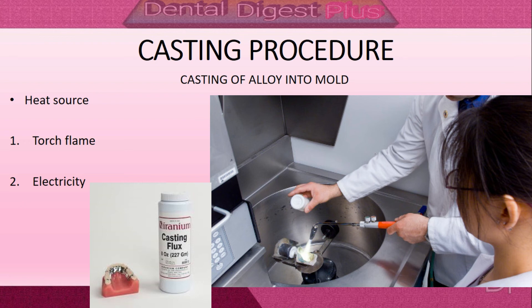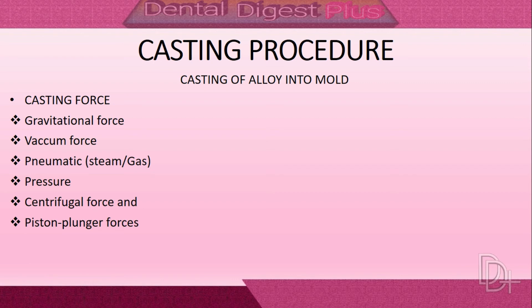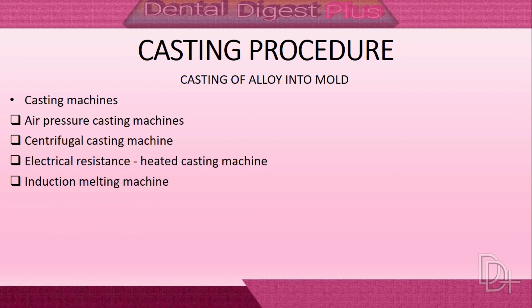Different types of casting force used to push molten metal into the mold include gravitational force, vacuum force, pneumatic force, pressure force, centrifugal force, and piston-plunger forces. Devices used to force molten alloy into the mold are called casting machines, which include air pressure casting machines, centrifugal casting machines, electrical resistance heated casting machines, and induction melting machines.